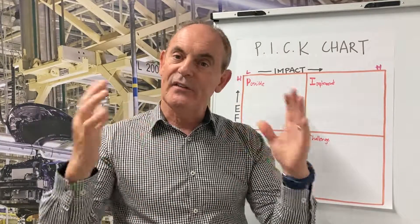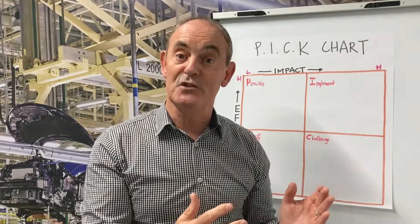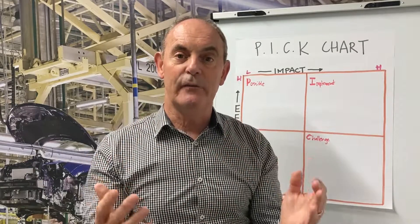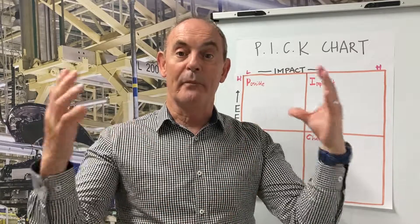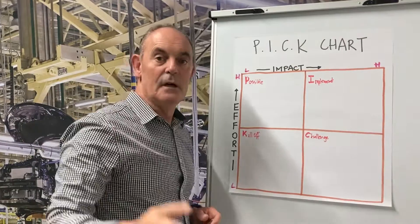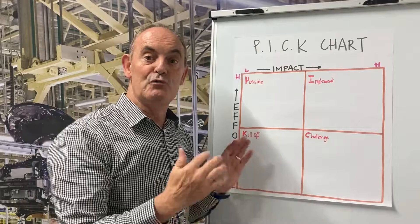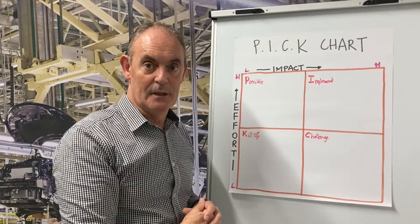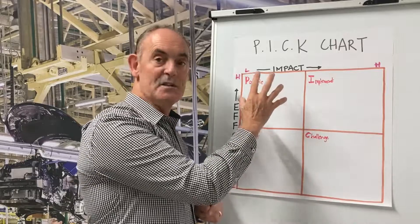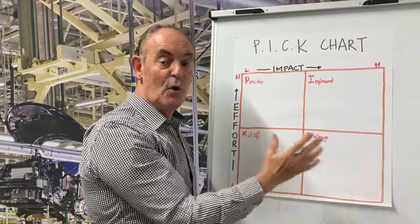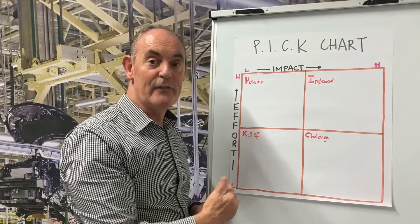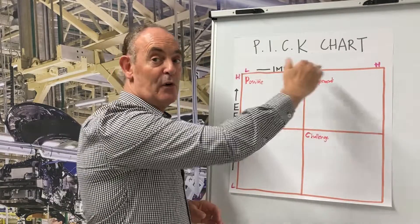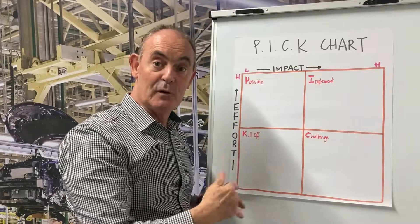Step number one is to set the scene with the team who's done the brainstorming. The purpose of the exercise is to identify the best ideas from the group of generated ideas. The second step is to draw on a whiteboard or flip chart the four-quadrant diagram based on PICK — Possible, Implement, Challenge, or Kill-off — as an effort-impact matrix, with higher effort on one axis and greater impact or benefit on the other.